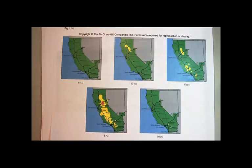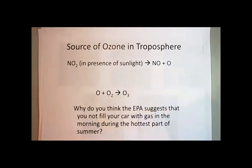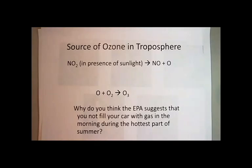What we recognize is there's a high correlation between the ozone that's produced and the NO2 that's produced from the NO emissions and from the VOC emissions. So the problem with the ozone, or the source of the ozone in the troposphere at the ground level, is cars.